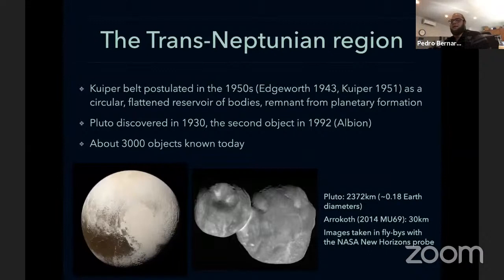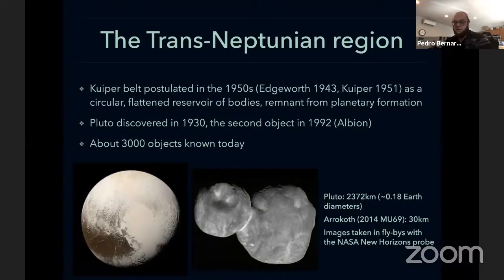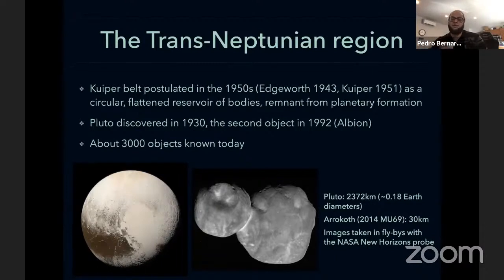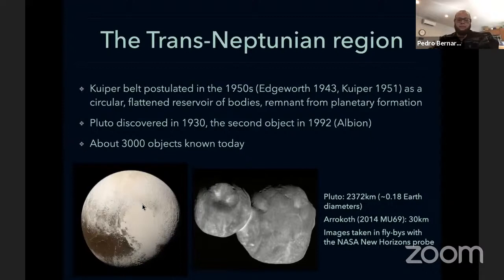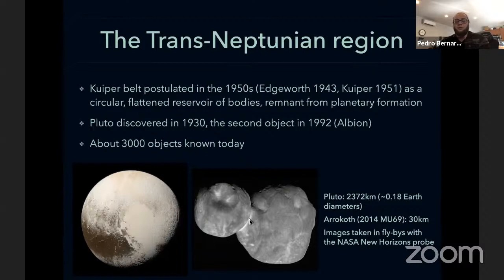The Kuiper Belt was postulated in the 1950s by Edgeworth and Kuiper as a circular, flat reservoir of bodies — a remnant from planetary formation. These bodies are called planetesimals, relics from the formation of the solar system. The first object discovered in this region was Pluto in the 1930s; the second was only discovered in 1992 and is called Albion. Pluto has a diameter of over 2,000 kilometers, while Arrokoth is only 30 kilometers in diameter — a very good example of a small solar system body.